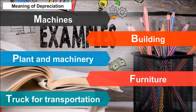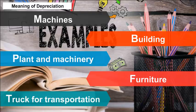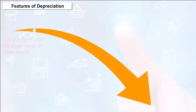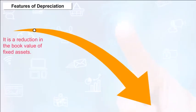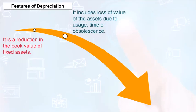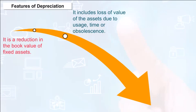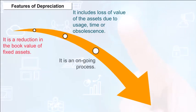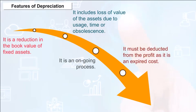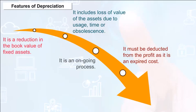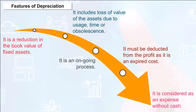Features of Depreciation: It is a reduction in the book value of fixed assets. It includes loss of value of the assets due to usage, time, or obsolescence. It is an ongoing process. It must be deducted from the profit as it is an expired cost. It is considered as an expense without cash.